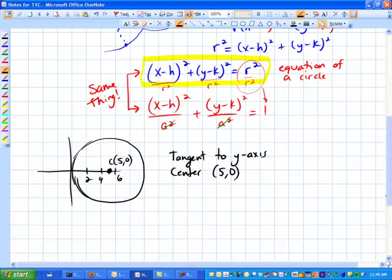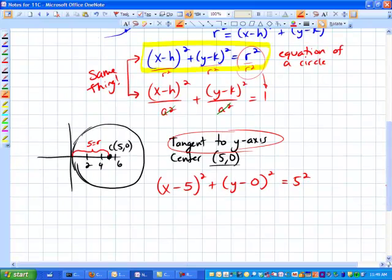And its center is at five zero. Well, this center right here gives me the information that I need for this part. And the tangent information, this tangent stuff, that tells me that this radius is five. So this must be five squared. So that would be one way to write the equation. Or you might see it written out like this. In fact, I probably wouldn't write the y minus zero. But that would be either one. Same thing. They mean the exact same thing.